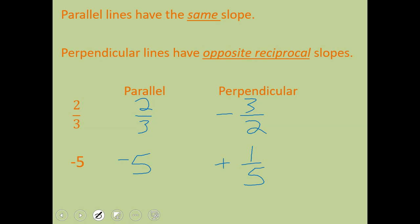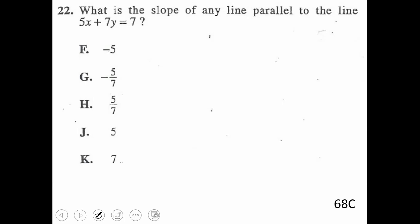Start off first. This one wants to know what is the slope of any line that is parallel to this line. So this goes back to the first skill. We have to get it to y equals mx plus b to find the slope. So if we've got 5x plus 7y equals 7, you would need to subtract 5x.